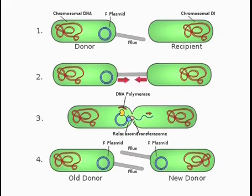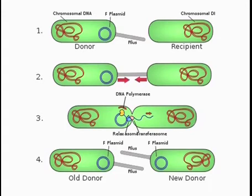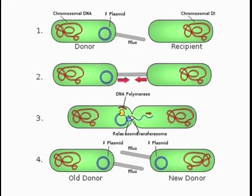The plasmid is nicked and a single strand of DNA is transferred to the recipient bacteria — the one that did not contain the F factor. Both cells then synthesize a complementary strand to produce a double-stranded circular plasmid. Both bacterial cells are now viable donors. The genetic material transferred during conjugation provides genetic advantages to the recipient, such as antibiotic resistance genes and sex factors, making it more advantageous than a cell devoid of them.